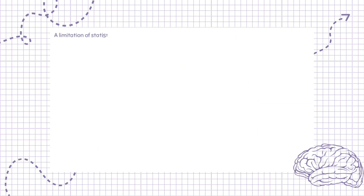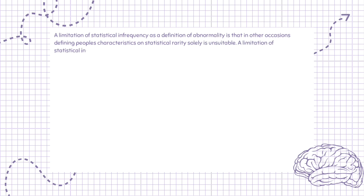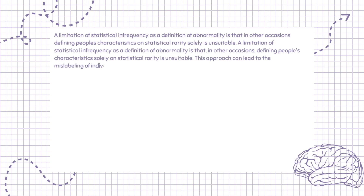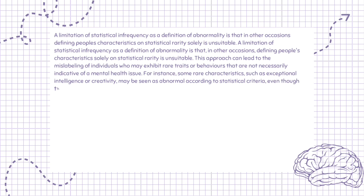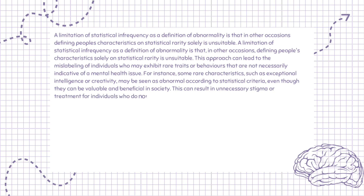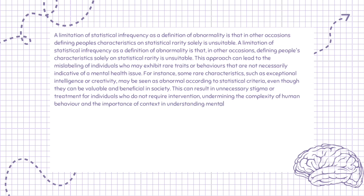A further limitation of statistical infrequency as a definition of abnormality is that defining people's characteristics solely on statistical rarity is unsuitable. This approach can lead to the mislabeling of individuals who may exhibit rare traits or behaviors that are not necessarily indicative of a mental health issue. For instance, some rare characteristics, such as exceptional intelligence or creativity, may be seen as abnormal according to statistical criteria, even though they can be valuable and beneficial in society. This can result in unnecessary stigma or treatment for individuals who do not require intervention, undermining the complexity of human behavior.